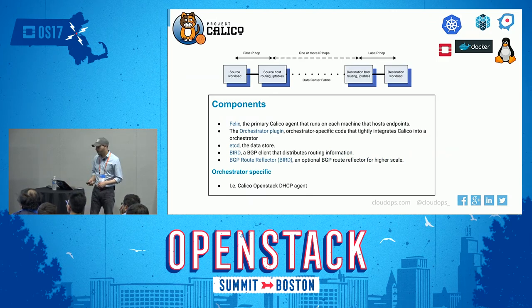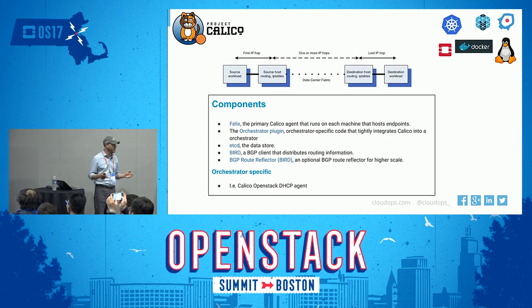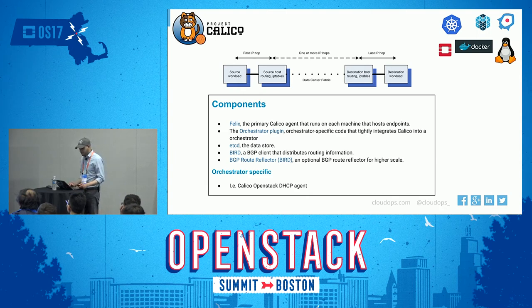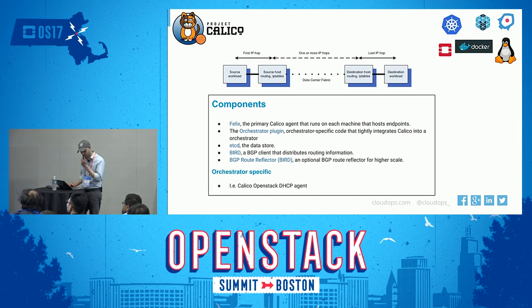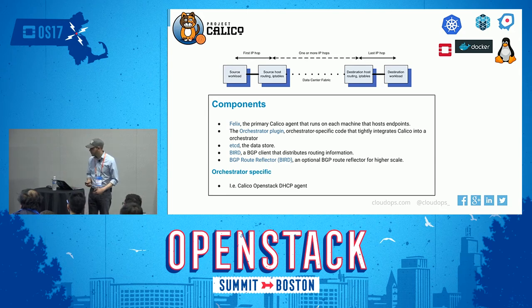Project Calico is a very interesting approach that supports multiple orchestrators. It does this by implementing the common language that everybody can speak: layer 3, IP. In OpenStack, you have your ML2 plugin that pushes configurations to each compute node. This is picked up by Felix, the agent running in the hypervisor or bare metal server, which pushes security using IP tables or BGP routing using the BIRD open source software. You can even do BGP route reflectors to scale up your data center, and you can even go to public cloud with this.